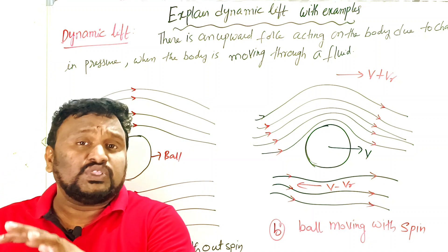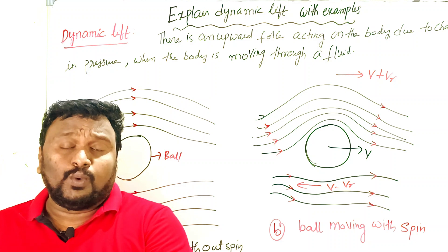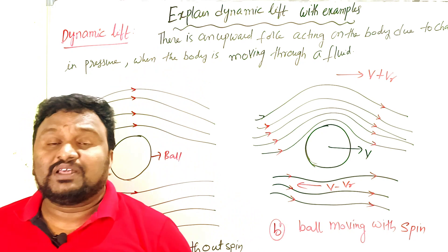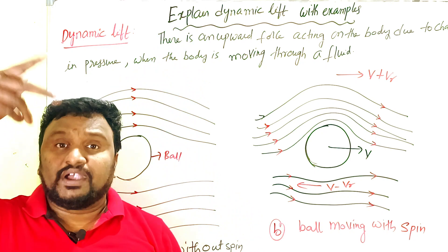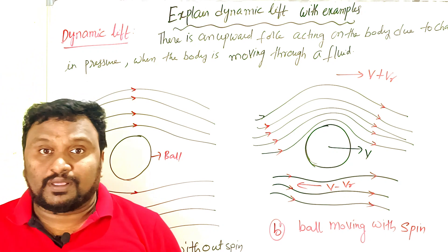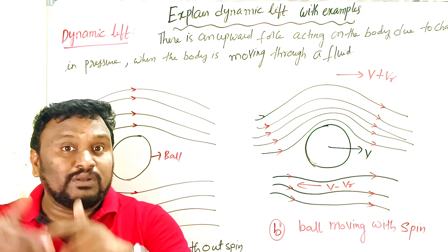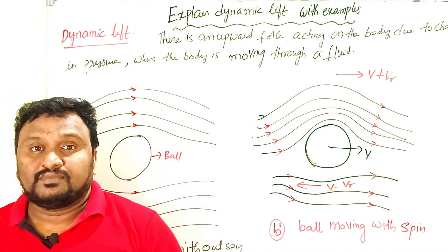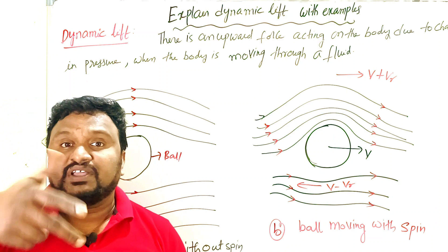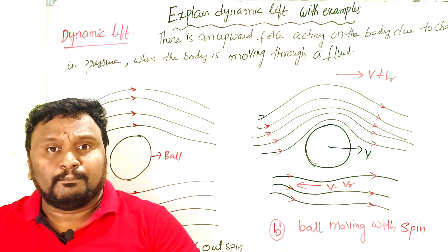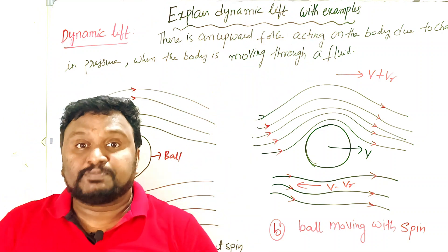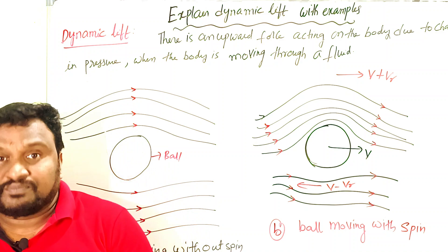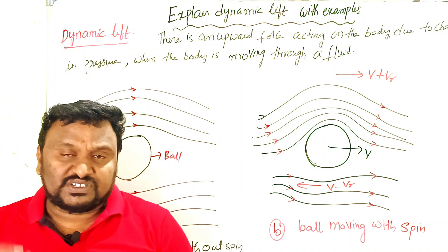When the ball is moving in air without any spin, what happens? Most of you may play cricket — there is spin bowling. When a ball is released from the bowler's hands, he turns his fingers so the ball spins. Even while the ball is in the air it continues to spin. What is happening there? Let us understand this first by understanding streamline flow.